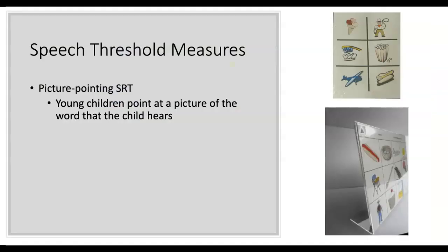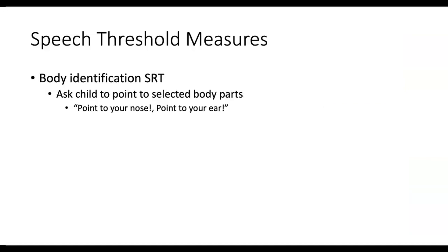Different ways to do this: picture pointing for young children and individuals with developmental disabilities. You can also ask children or adults to point to body parts — 'Johnny, show me your nose, point to your eyes, point to your shoes.' They're not spondee words, but you're getting some idea of the lowest level at which they can do a task. We call that a body identification SRT, and you have to note that on the audiogram so the next person knows how it was obtained.